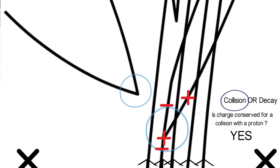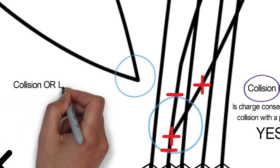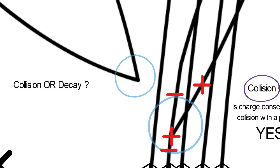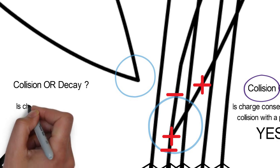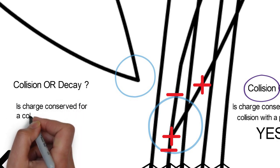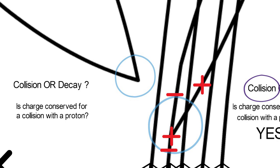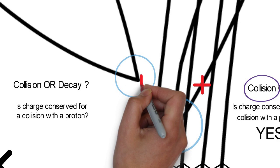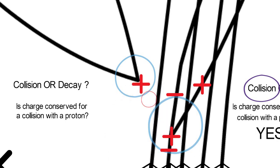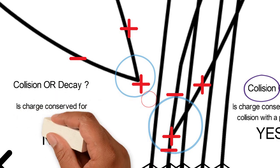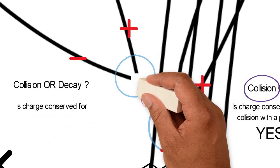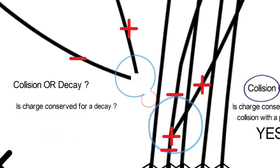Let's look at another example. We seem to have something that produced two tracks moving upward and to the left, so they had some initial momentum. The bubble chamber can only show tracks for charged particles, so perhaps there was a neutral particle that either collided with a proton or decayed. If it collided with a proton, a neutral charge colliding with a positive would need to produce a positive and a negative — but this doesn't obey charge conservation. What if it was a decay? A neutral particle decaying into a negative and a positive has a net charge of zero — yes, charge is conserved. We have a neutral particle decaying.